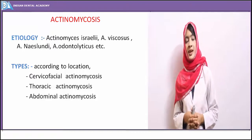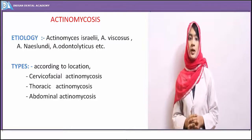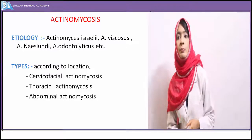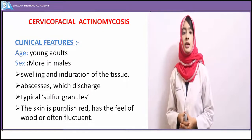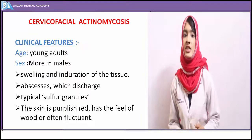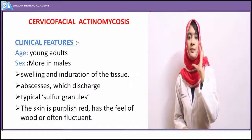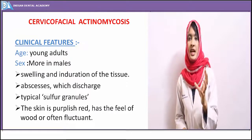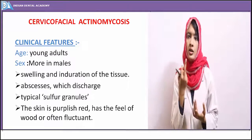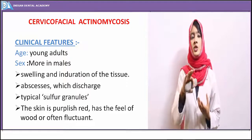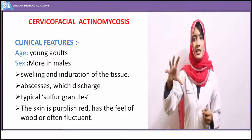According to location, actinomycosis is divided into cervicofacial, abdominal, and pulmonary types. Cervicofacial actinomycosis is more commonly seen in younger individuals around 20 years of age, and males are more commonly affected. The inflammation begins at the site of entry — either a break in skin or mucosal surface continuity — leading to a swelling where the overlying skin becomes hard and deep purplish in color.